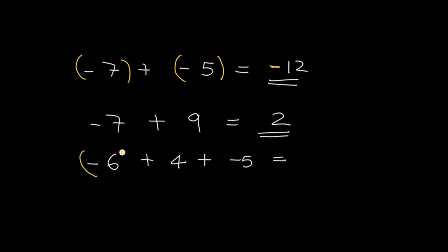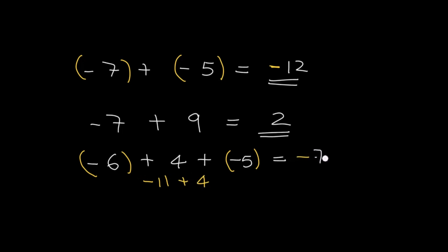On this one, we've got negative integers, so let's group them and add. Negative 6 and negative 5 will give us negative 11. Plus 4, and take the sign of the bigger number — that will be negative 7.